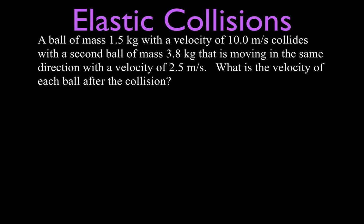We have a ball that has a mass of 1.5 kilograms moving with a velocity of 10 meters per second, and it collides with a second mass that has a mass of 3.8 kilograms and it's moving in the same direction with a velocity of 2.5 meters per second. And we are going to treat this as a perfectly elastic collision and we want to know what is the velocity of each of those masses after the collision.